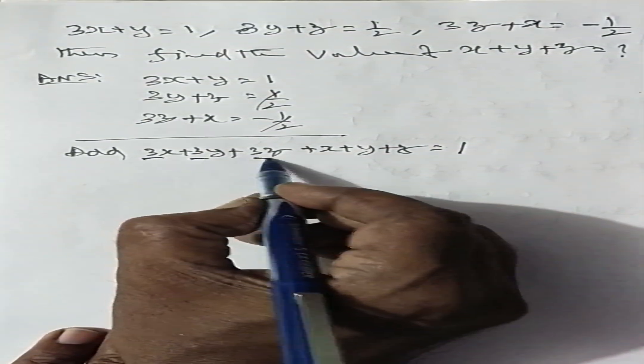Here, plus y and minus 1 cancel. That is equal to 1. Here, 3 common.